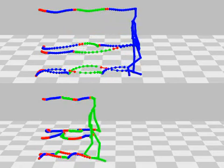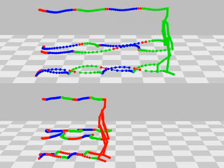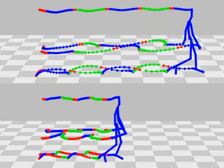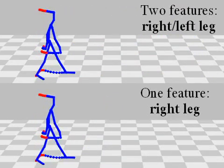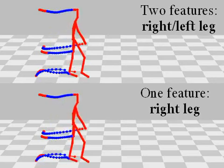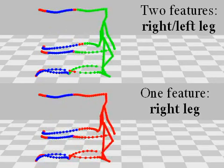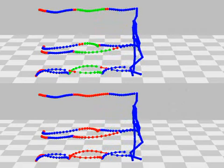Changing the combination of features will automatically lead to an adaptation of the induced segmentation. For example, reducing the number of features leads to longer segments. In other words, the temporal resolution is automatically adjusted to the spatial resolution.